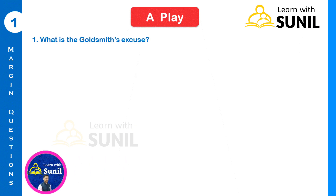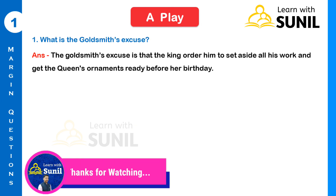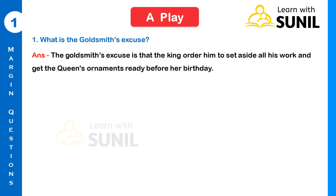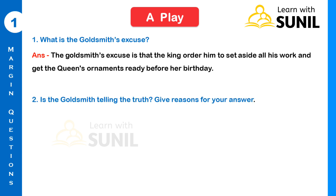First question: What is the goldsmith's excuse? Answer: The goldsmith's excuse is that the king ordered him to set aside all his work and get the queen's ornament ready before her birthday. Second question: Is the goldsmith telling the truth? Give reasons for your answer.